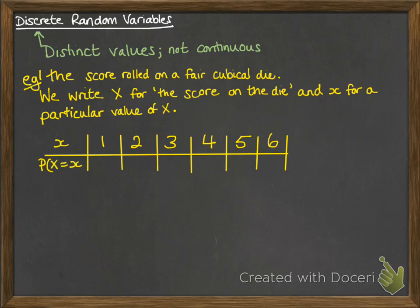Then we would write this on the bottom. So the probability that capital X equals lowercase x. So that's the probability that our random variable that we've named as X can take this particular value. So in the first space we would write the probability that it could take 1, the probability that x equals 1. That of course is 1/6, and it's going to be the same for all of them.